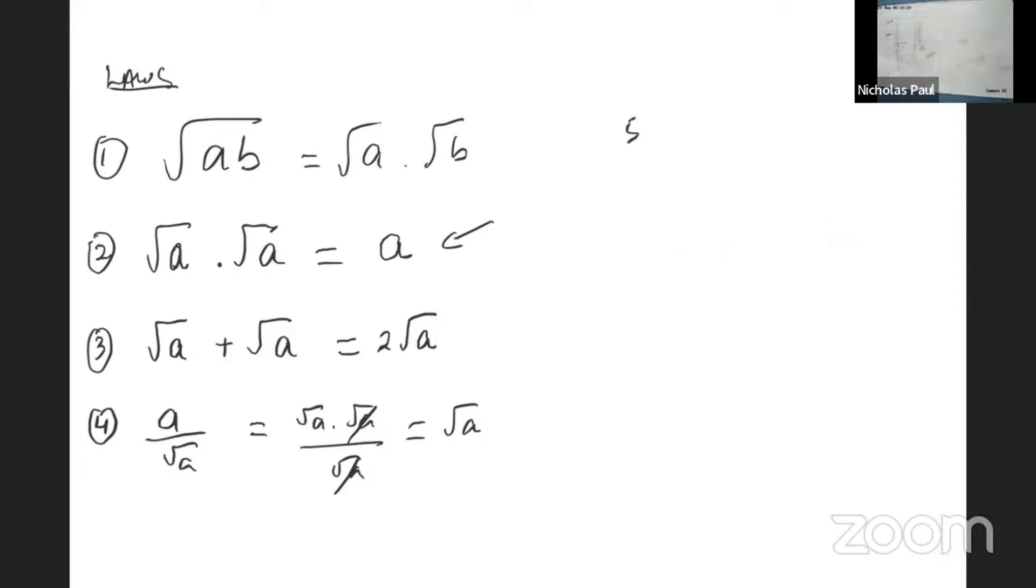And rule number five: what do you do with things like this? Root a plus root b divided by root c minus root d. What do you do with things like that? How do you simplify things like that?